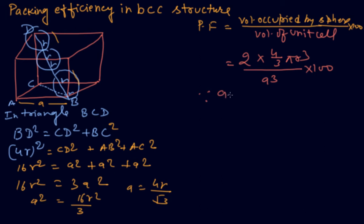From the diagram also A is coming 4R by root 3. Put the value 4R under root 3. Now put these values in the packing fraction formula and get your answer that is coming 2 multiply by 4 by 3 pi R³ divided by 4R under root 3 cubed multiply with 100.